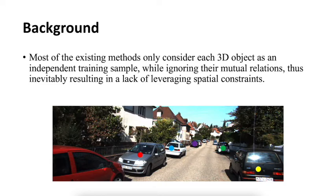Most current methods consider each 3D object as an independent training sample and leverage projection loss as a geometry constraint. However, this constraint is a partial and loose constraint which ignores the relative positions of objects and the fact that all objects are located in the same world plane.